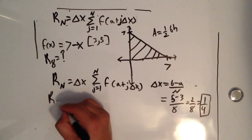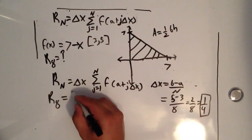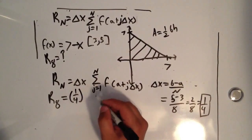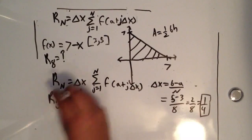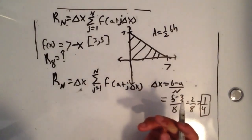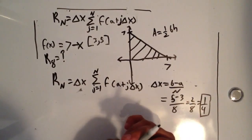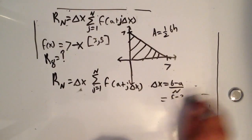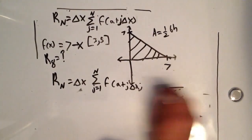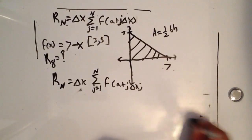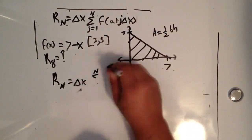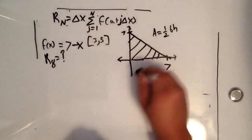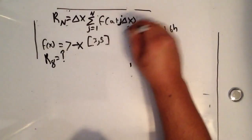So R(8) = 1/4. Since we already computed Δx = 1/4, that should lead us on the right path.